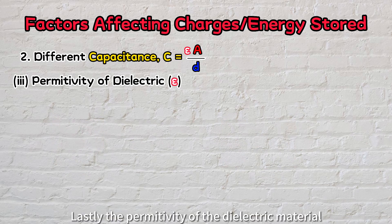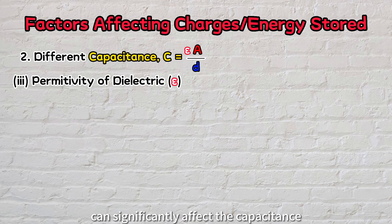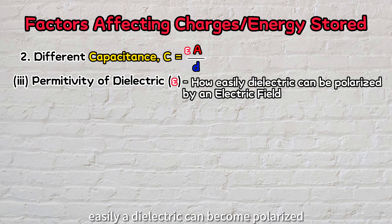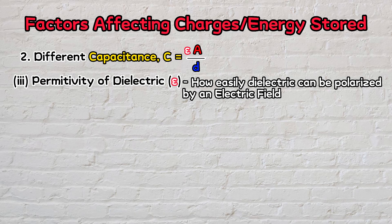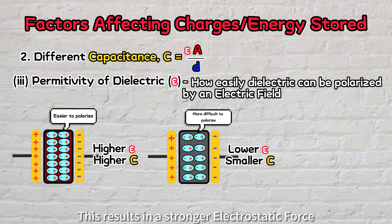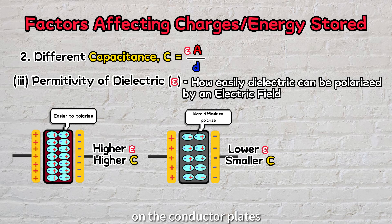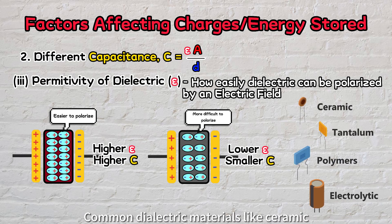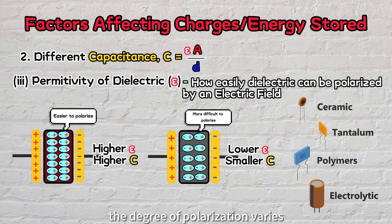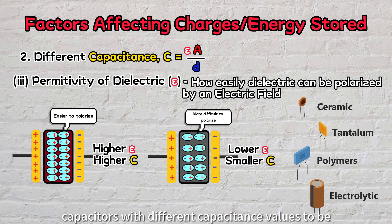Lastly, the permittivity of the dielectric material can significantly affect the capacitance. Permittivity is the measure of how easily a dielectric can become polarized under the influence of an electric field. Materials with higher permittivity are easier to polarize and facilitate greater charge redistribution. This results in a stronger electrostatic force, allowing more charges to accumulate on the conductor plates. Common dielectric materials like ceramic, tantalum, and polymers have different permittivity values. With the same voltage applied, the degree of polarization varies, allowing capacitors with different capacitance values to be designed.